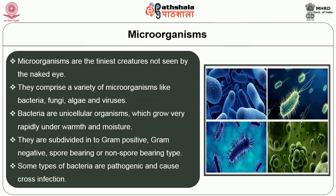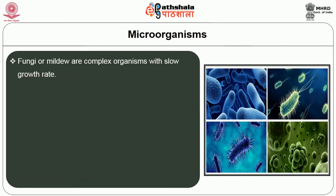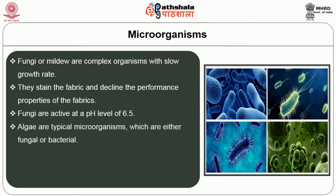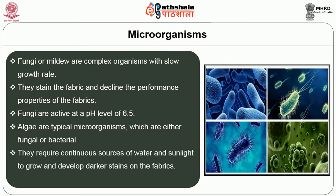Some types of bacteria are pathogenic and cause cross-infection. Fungi are mildew or complex organisms with slow growth rate. They stain the fabric and decline the performance properties of the fabrics. Fungi are active at a pH level of 6.5. Algae are typical microorganisms which are either fungal or bacterial. They require continuous sources of water and sunlight to grow and develop darker stains on fabrics. Algae are active in the pH range of 7 to 8.